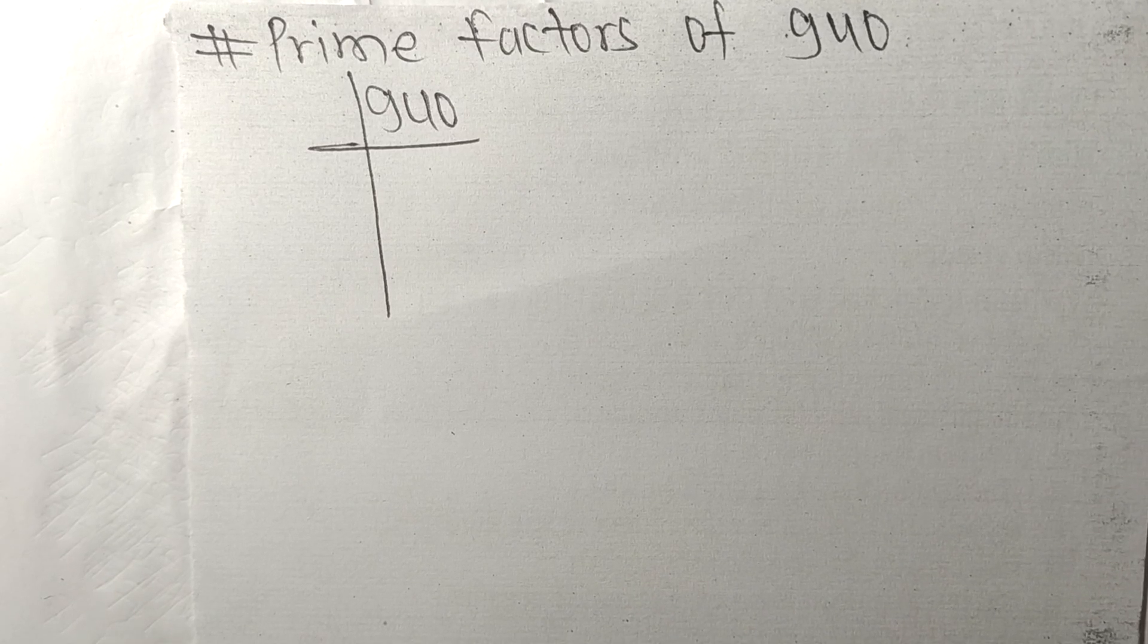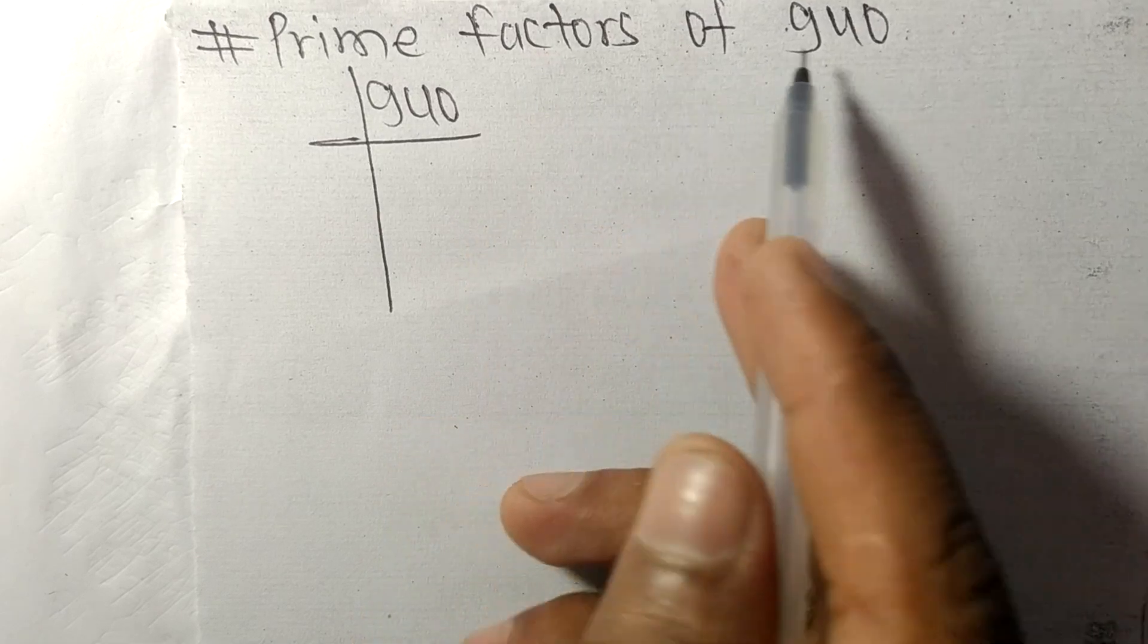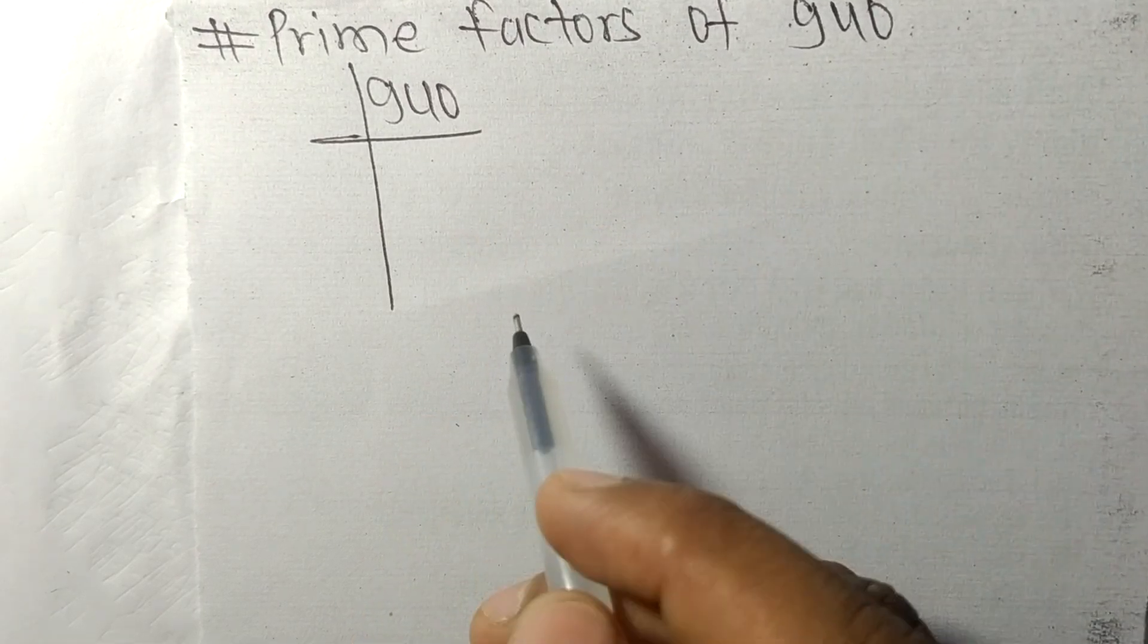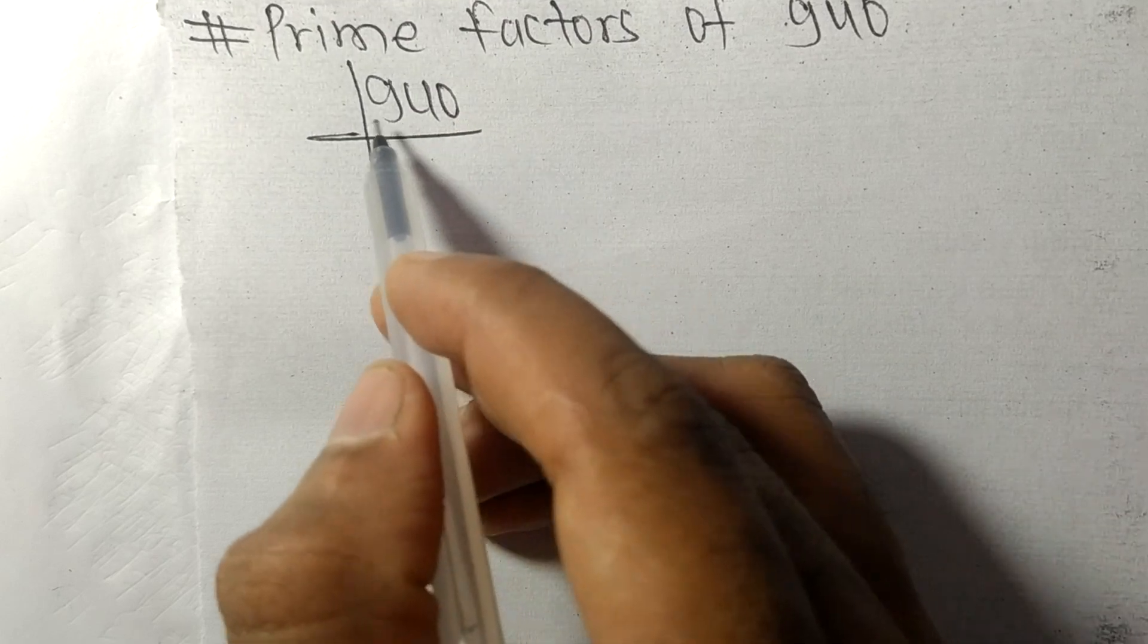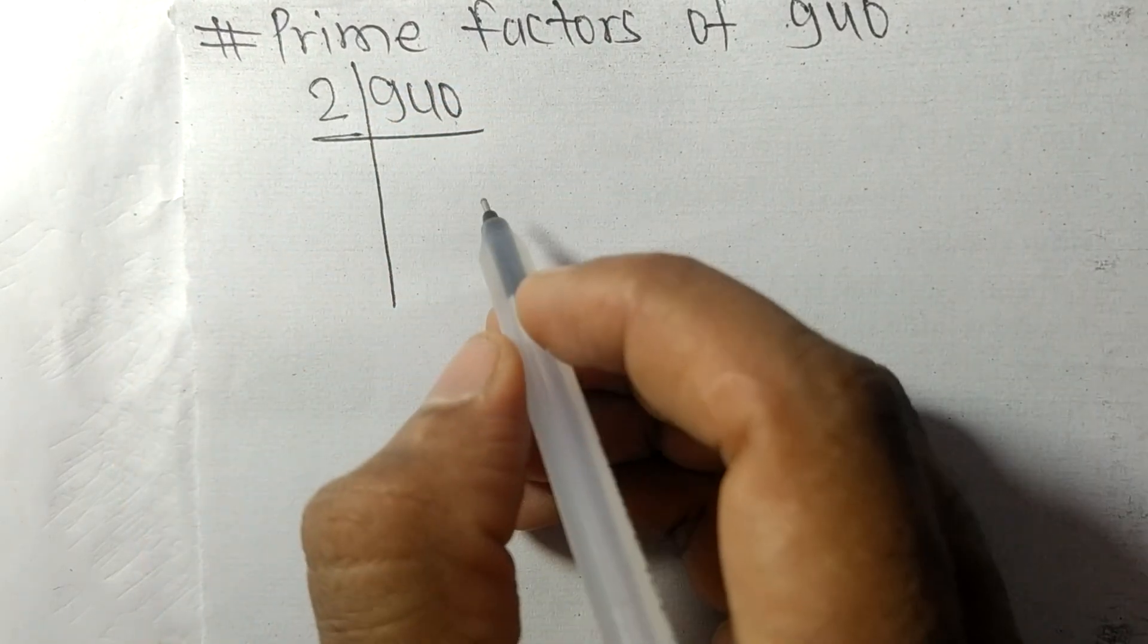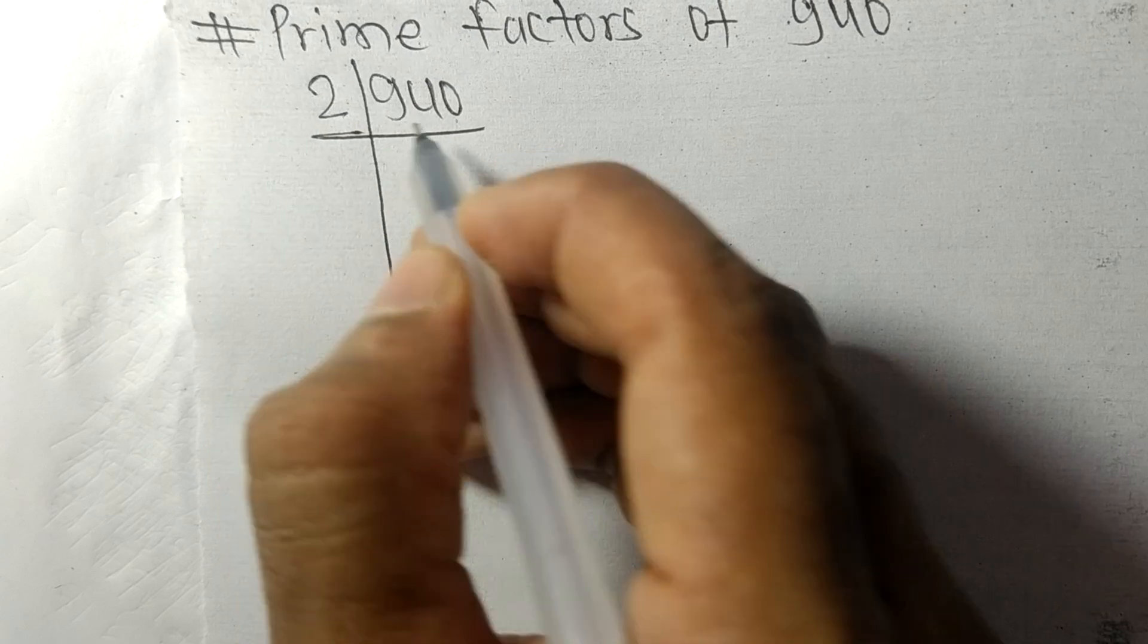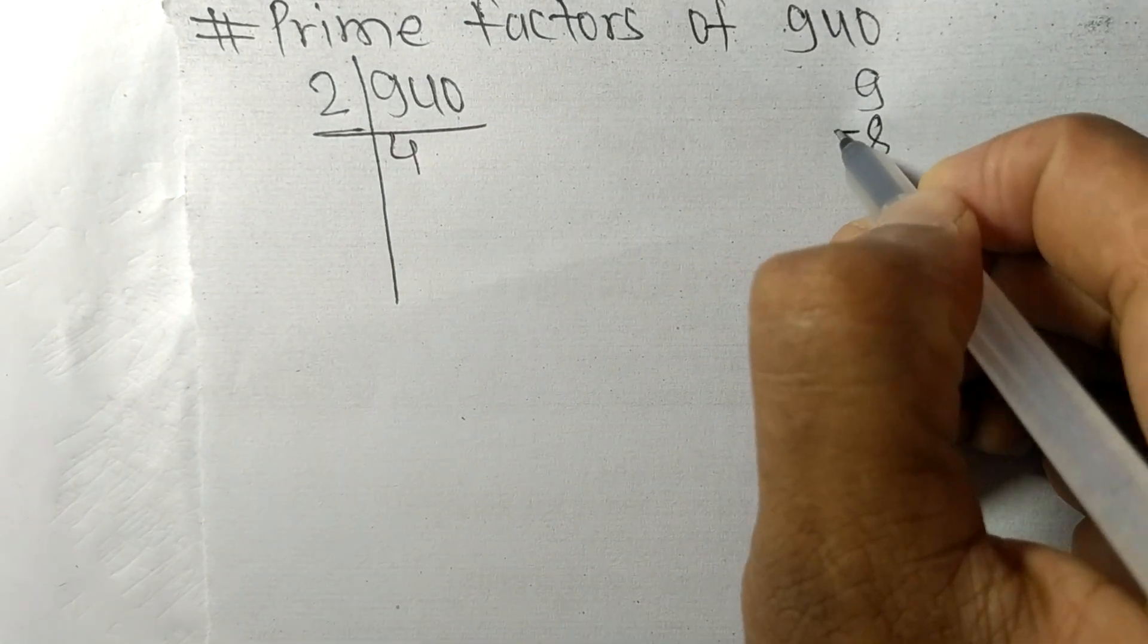So today in this video we shall learn to find the prime factors of 940. So at last it contains 0, so these whole numbers are divisible by 2. So first we have 9, so 2 times 4 is 8.